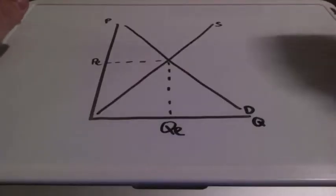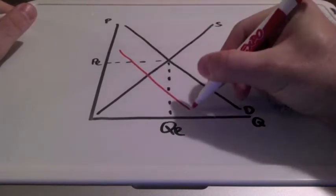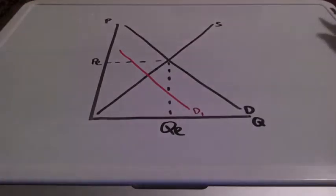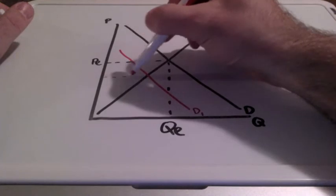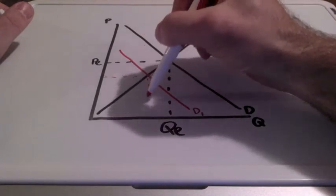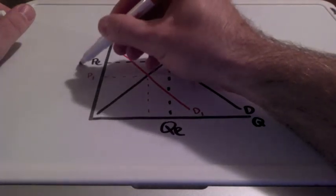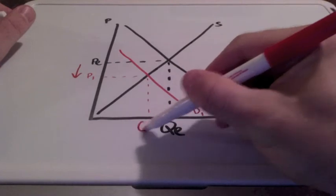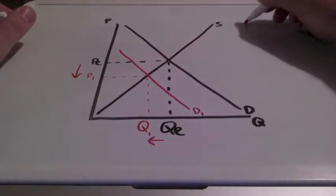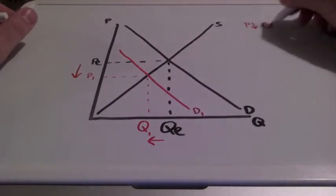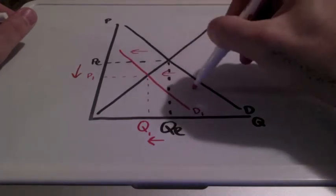In this example, we are going to take a look at a decrease in demand because consumer expectations are low and the size of the market — meaning the number of buyers — has also gone down. When we have a decrease in demand, both price and quantity decrease. I'm going to draw a leftward shift in demand.